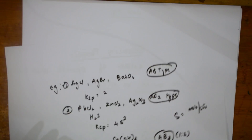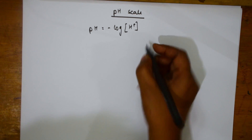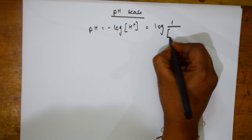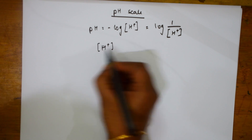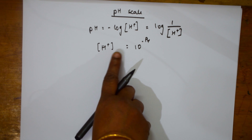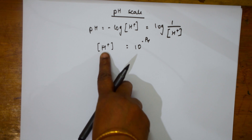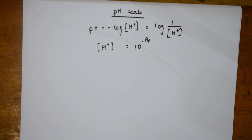Now let us move to the pH scale. What is pH? You have seen the pH meter and pH paper in your lab. Rinson defined pH of a solution as pH equals negative logarithm of H plus ion concentration, which can be written as log of 1 divided by H plus. Under base 10, H plus ion concentration equals 10 to the power of minus pH. A decrease of one pH unit means the acidic nature increases 10 times — remember this concept.